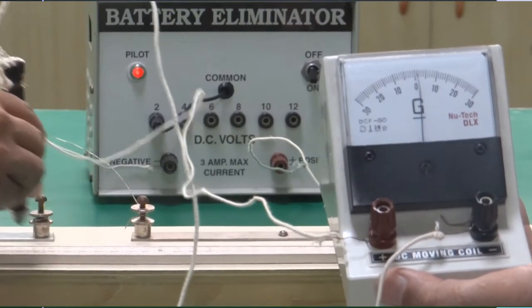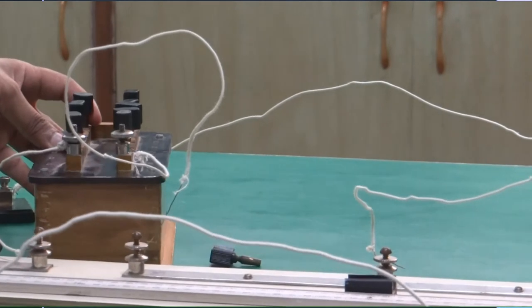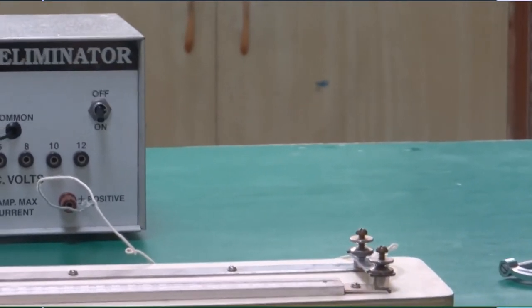Similarly, you will take four or five readings from this, take different values of the known resistance. And then we will see in the observation table, how we will determine the value of this unknown resistor.